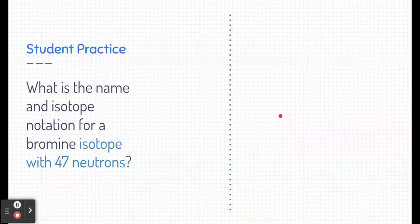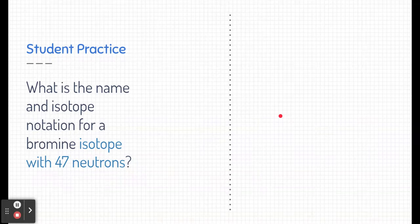So, let's finish off with a practice. Again, try to pause the video and see if you can determine the answer to this question. What is the name and isotope notation for a bromine isotope with 47 neutrons? Try to pause the video now. If you need some help, unpause the video, and I'll give you a hint.